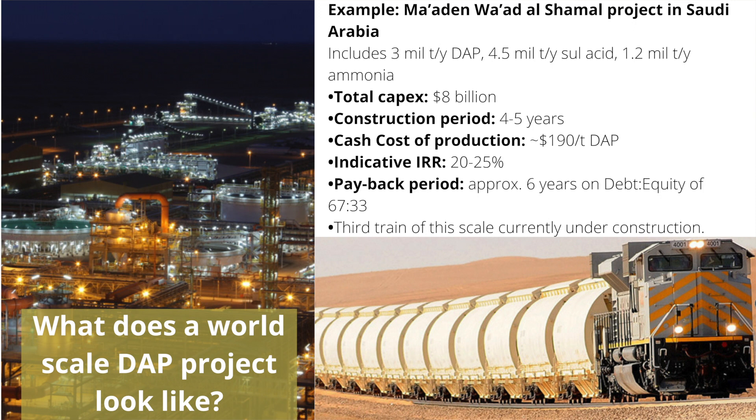Here we have an example of a new project built in Saudi Arabia. The production economics of any commodity are always a key price determinant. If the international price stays below the production cost for a producer — i.e. the producer makes a loss — then we can expect that producer to consider shutting his plant. On the other hand, if the price of phosphates stays well above the production cost of most producers, then we have investment in new capacity as producers look to take advantage of positive margins.